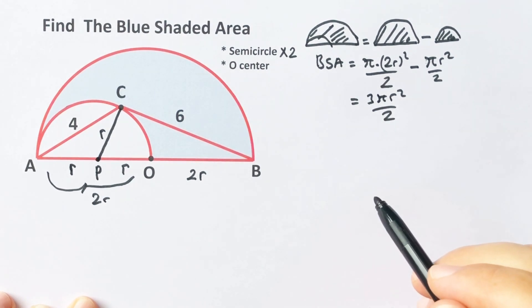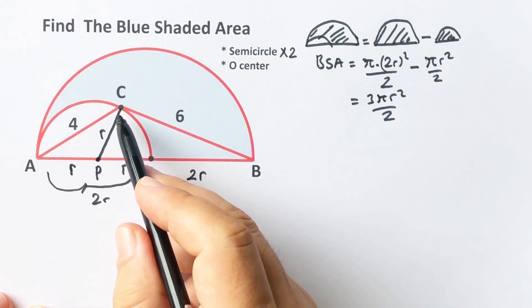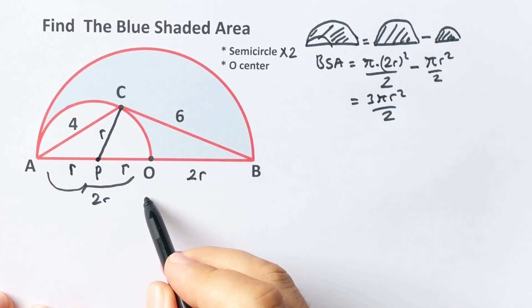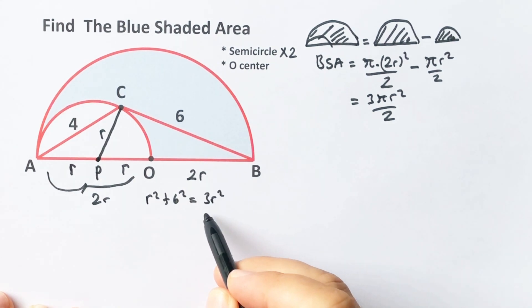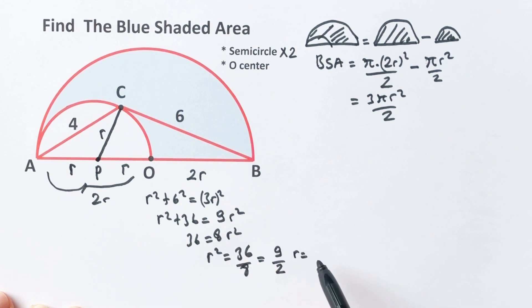If we calculate r², we get the blue shaded area. Let's calculate r² for this triangle. If we apply Pythagorean theorem, r² plus 6² equals (3r)². r² plus 36 equals 9r², therefore 8r² equals 36, so r² equals 9 over 2. Therefore r is going to be 3 over root 2.